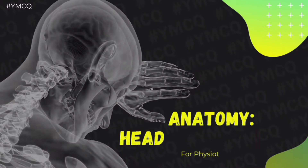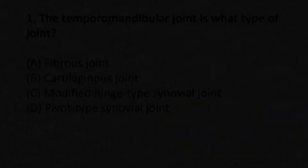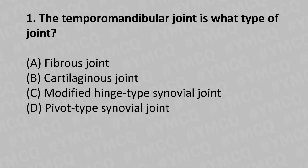Hello, welcome to today's topic: Head and Neck Anatomy MCQ. Moving to our first question: the temporomandibular joint is what type of joint? Option A: fibrous joint. Option B: cartilaginous joint. Option C: modified hinge type synovial joint. Option D: pivot type synovial joint.